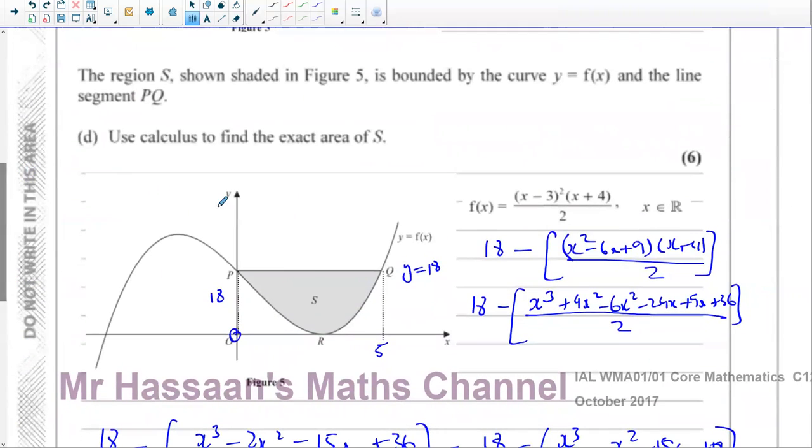Okay. So basically, we took the equation of the line, y equals 18, and subtracted from it the equation of the curve. And then we integrate that, what we get between 0 and 5, will give us the area between them. As I said, we could have taken the area of this rectangle, 18 times 5, and then just integrated this. But of course, we'd have to expand it out first. And then subtracted the two answers.